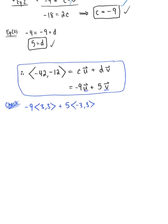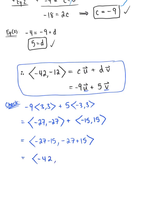So by the distributive property, this gives us negative 27, negative 27 for our first vector plus, distributing that 5, we have minus 15, positive 15. And combining those like components, we're going to have negative 27 minus 15 and negative 27 plus 15, which leaves us with a final answer of negative 42, negative 12. So this confirms our conclusion for the linear combination of vector u and vector v.